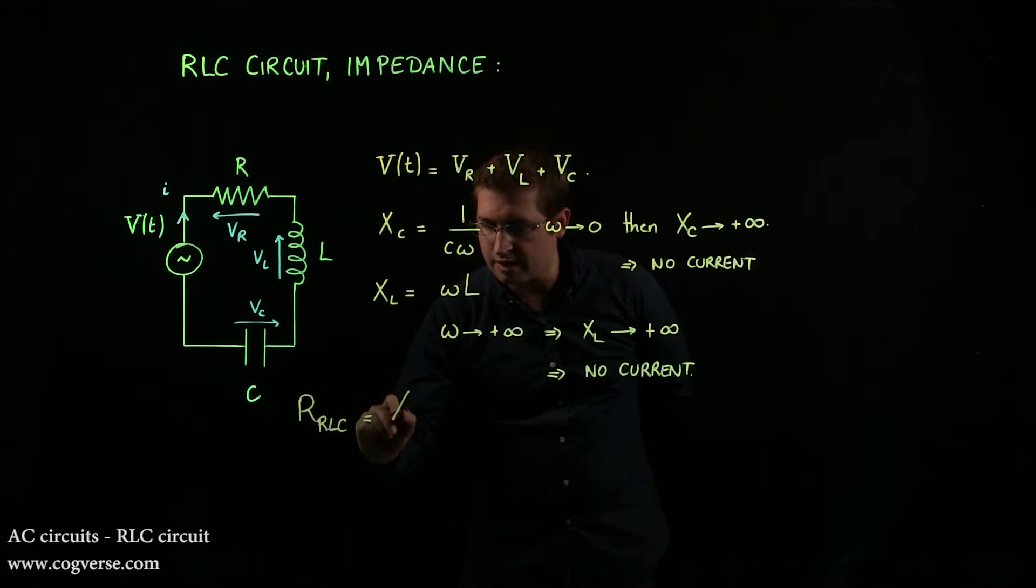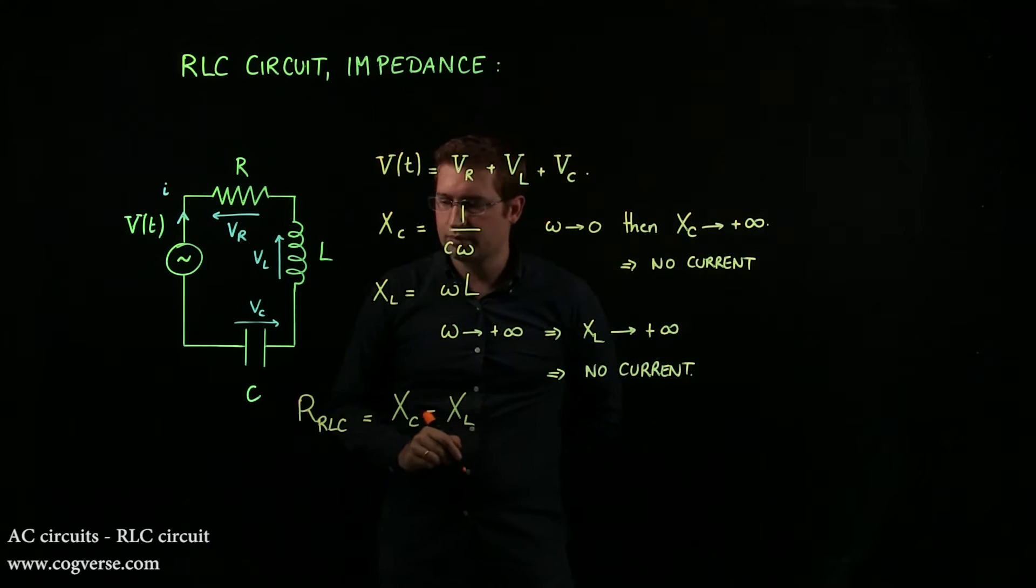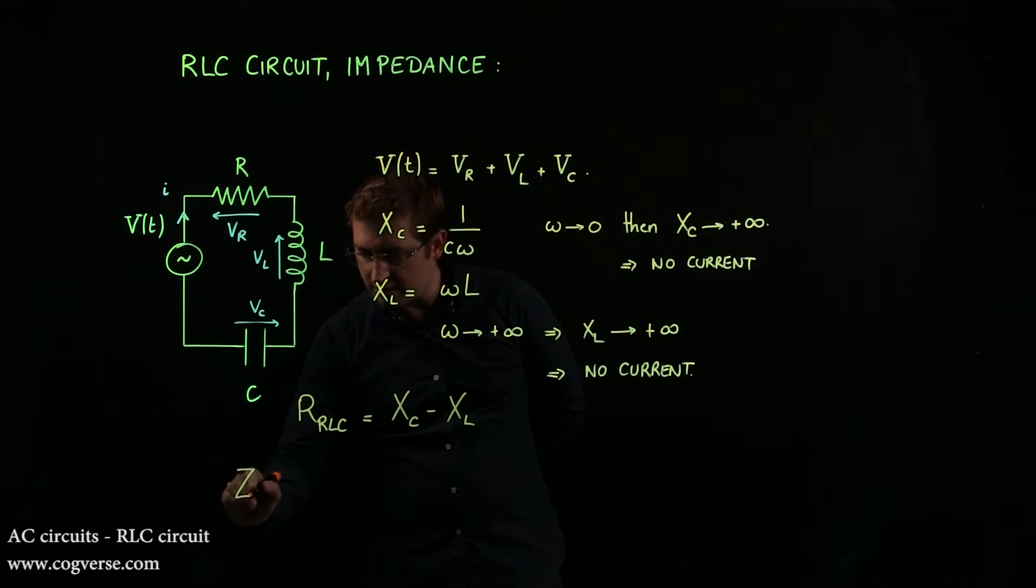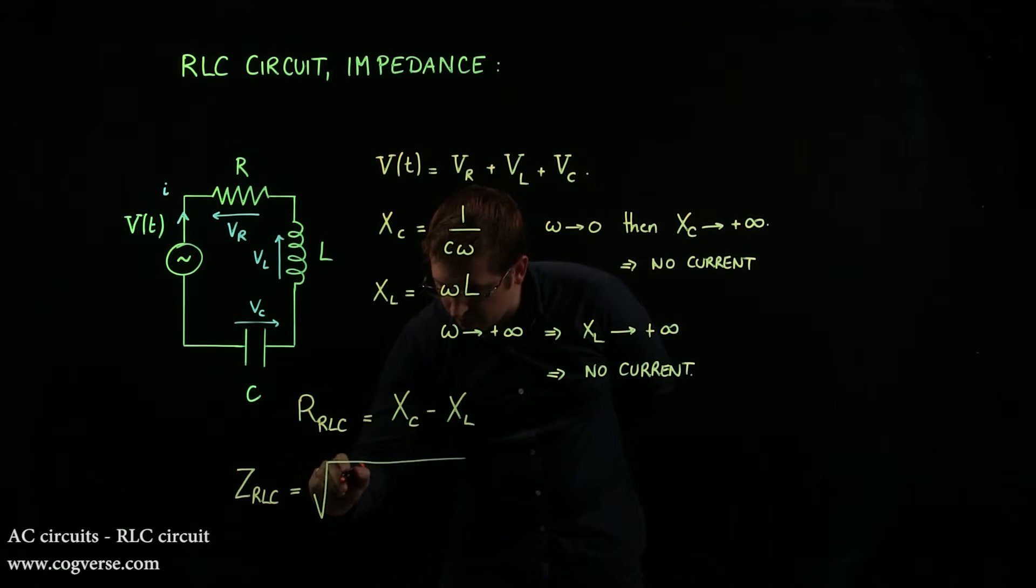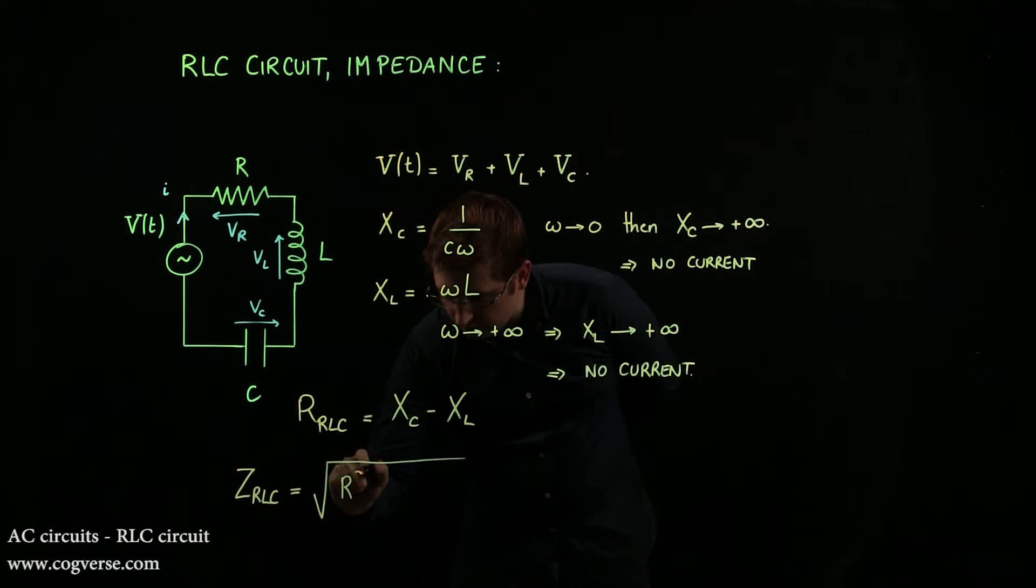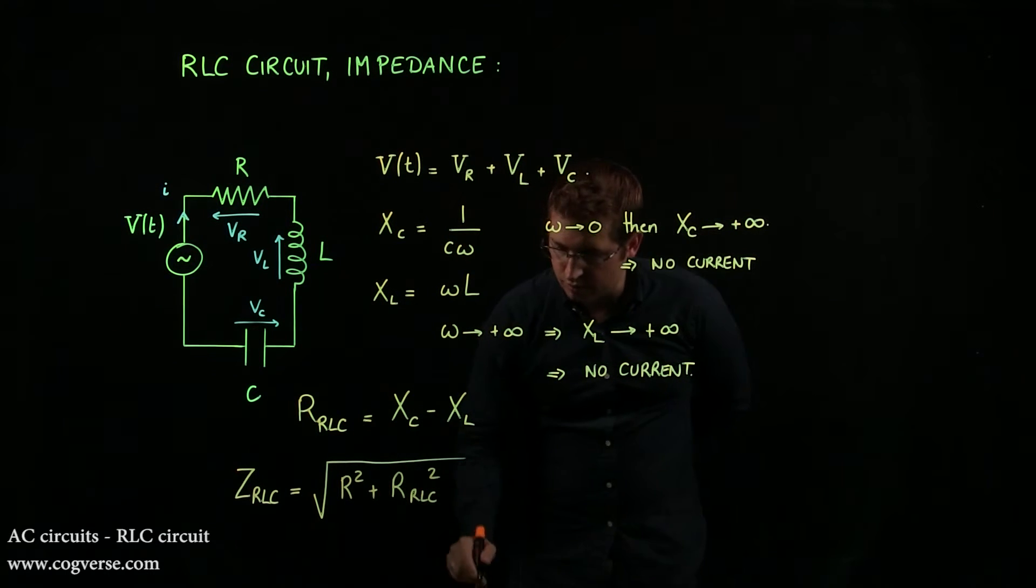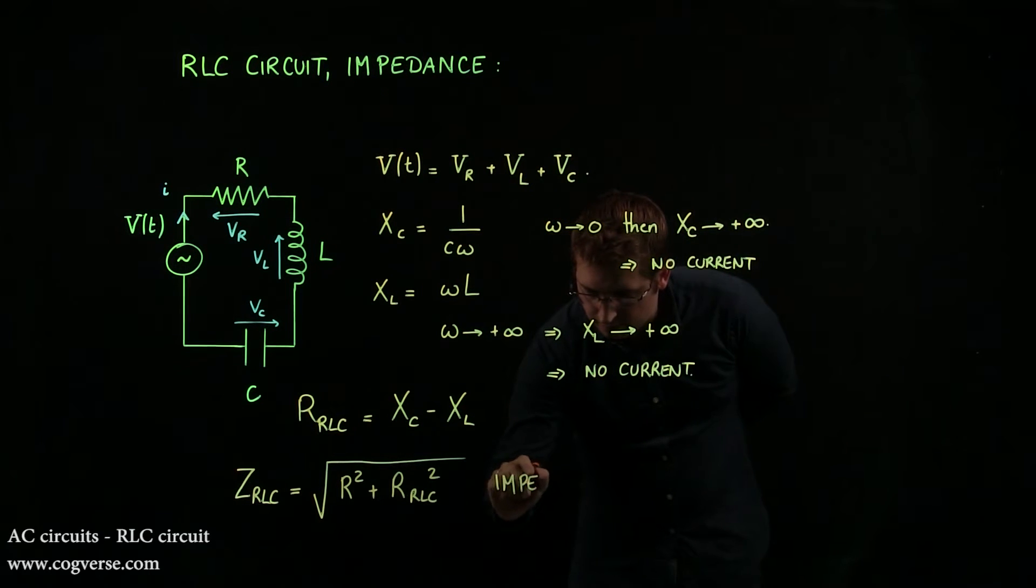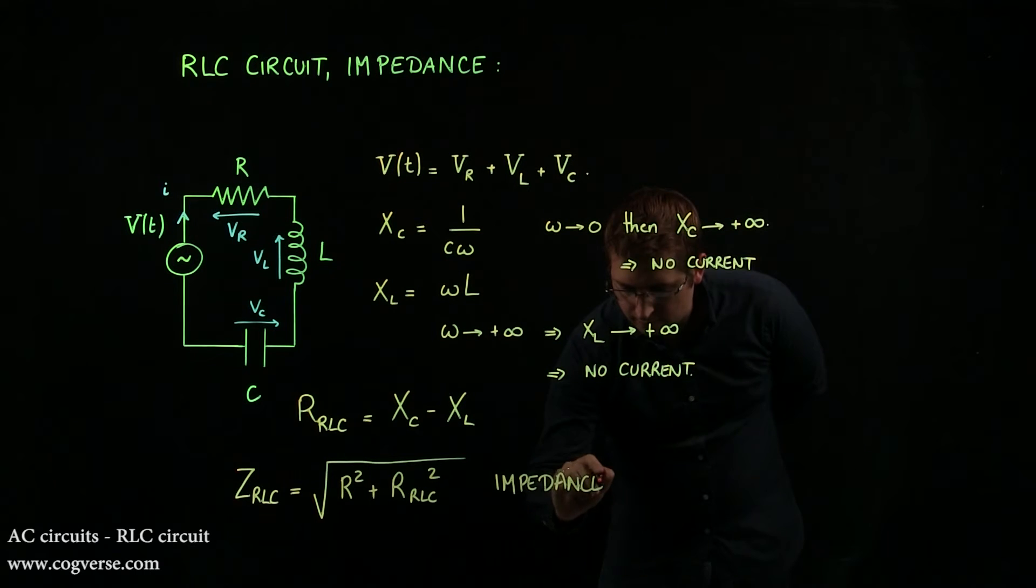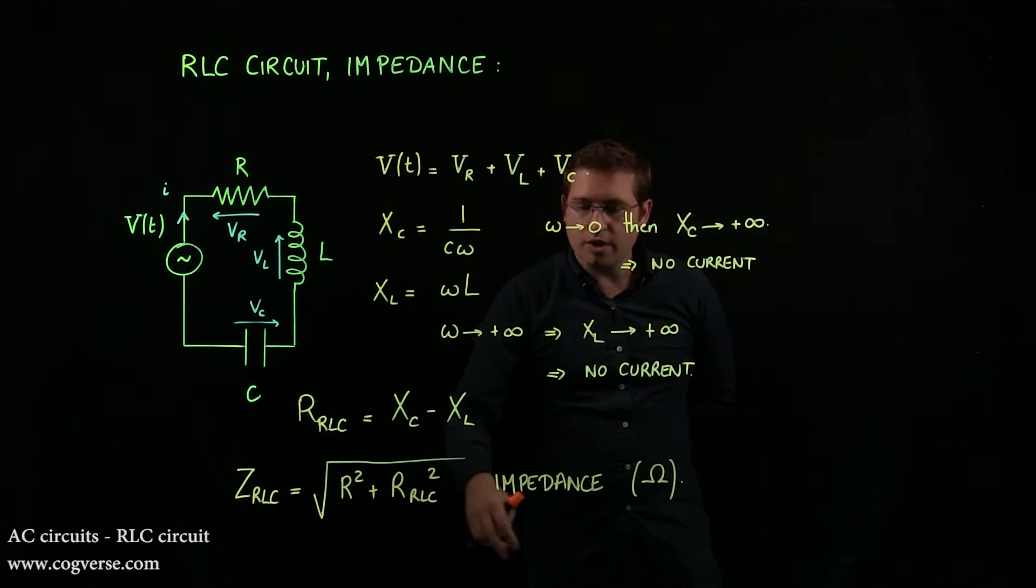And we're going to find that as Xc minus XL. And then the impedance Z of the RLC circuit is going to be square root of R squared plus RRLC squared. And that is the impedance, and it's in ohms.